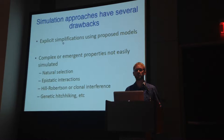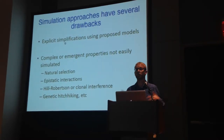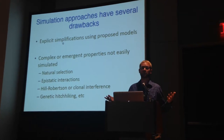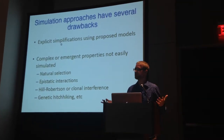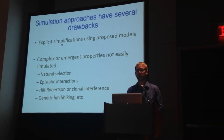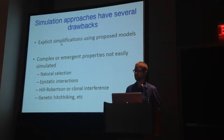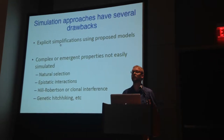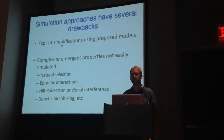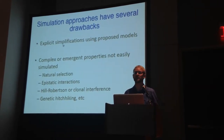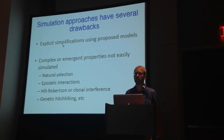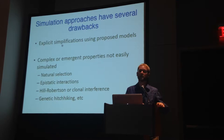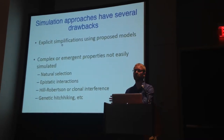Both of these two approaches have a couple of drawbacks. The great thing about simulations is that they make explicit simplifications using proposed models of evolution — and a drawback to simulations is also that same thing. They have a very difficult time handling very complex or even emergent properties of the evolutionary process, including natural selection, distribution of mutational effects, and complex epistatic interactions — all of these things changing dynamically over time.